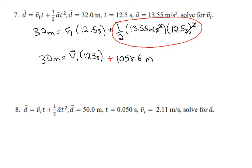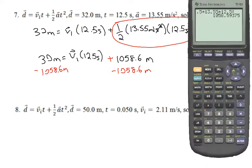That's equal to 30 meters equals V_i times 12.5 seconds. Now I need to keep getting that V_i by itself, so I'm going to subtract 1058.6 meters from both sides. So 30 minus that number that I had there - I can either just type it in again, or if you push second answer in the TI-84 model calculators, the answer will be whatever was in the last line. So this is 30 minus that number,